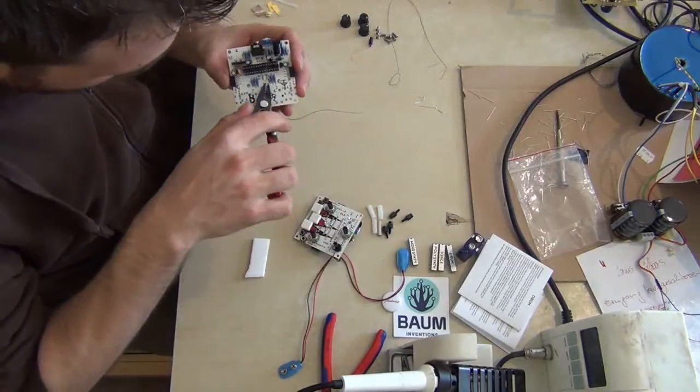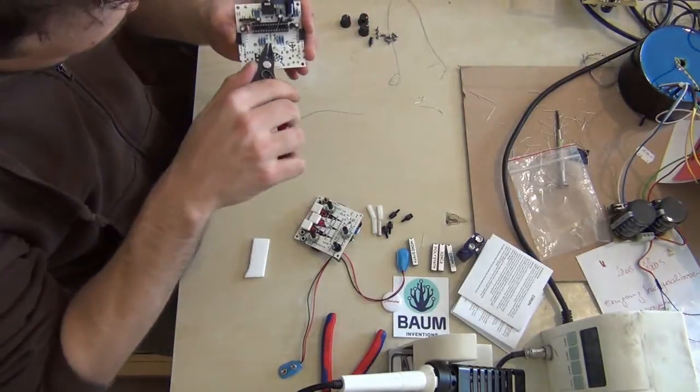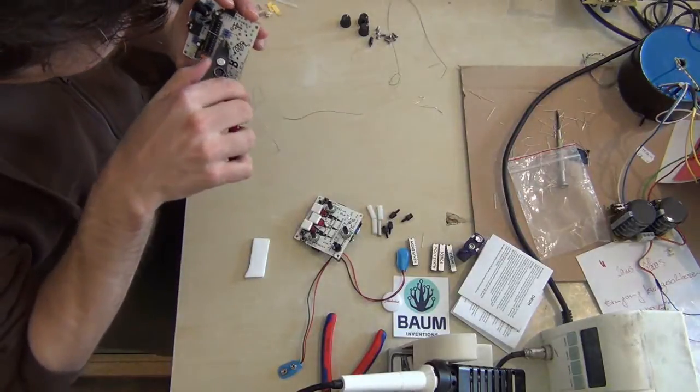All the parts are clearly labeled on the circuit board. The polarity of the capacitors is clearly labeled. The diode is clearly labeled. The switch is clearly labeled too.